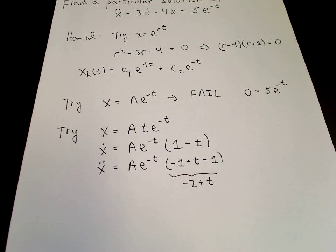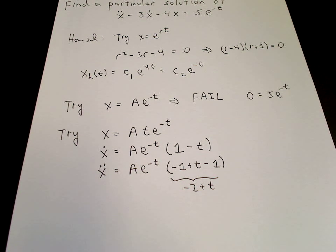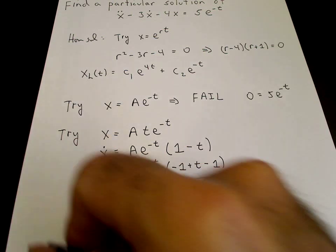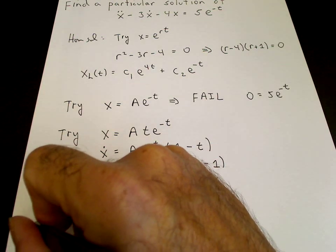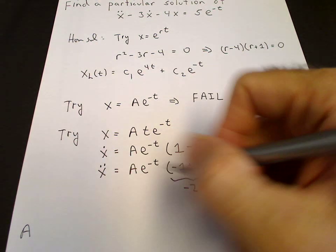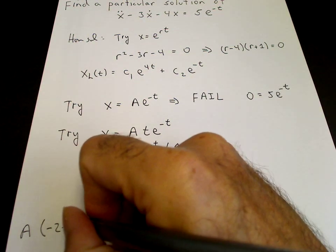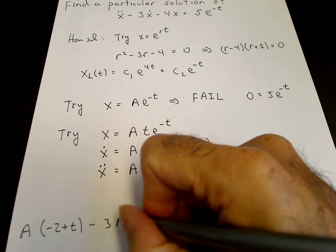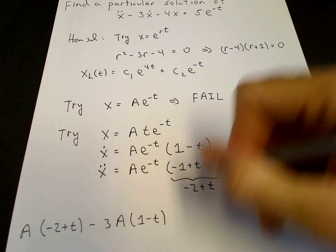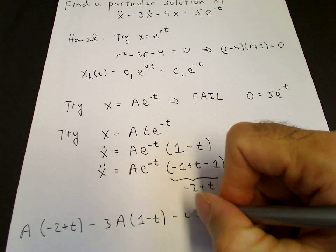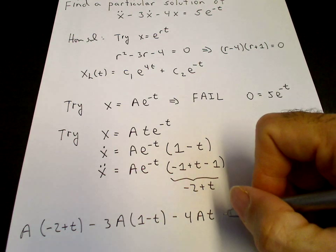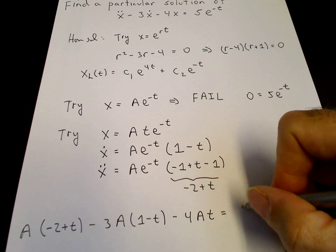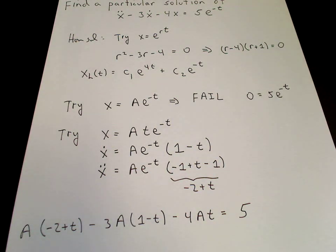We substitute into the equation. The e to the minus t cancels throughout. So x double dot gives a times minus 2 plus t; minus 3 times x dot gives a times 1 minus t; minus 4 times x gives minus 4a times t. Setting this equal to the right-hand side of 5, with the e to the minus t canceled.